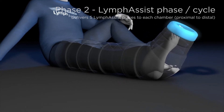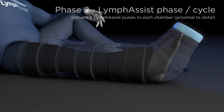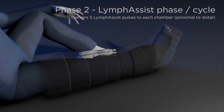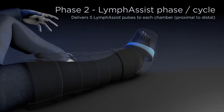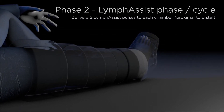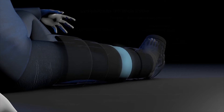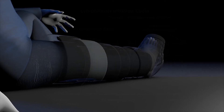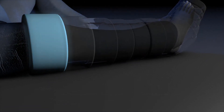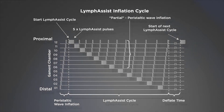This complete sequence is repeated for all chambers and takes approximately 15 minutes to deliver. Like the sequential and wave modes, lymph assist does not produce a pressure gradient. To aid the understanding of this complex yet effective mode, you may wish to refer to the accompanying graphs.